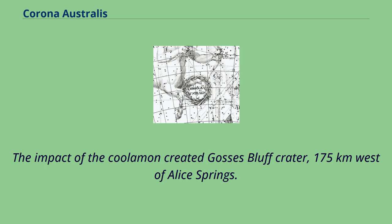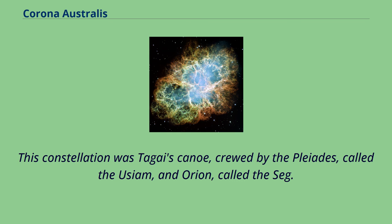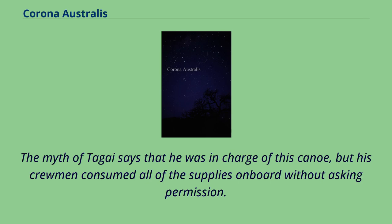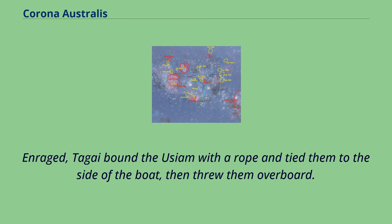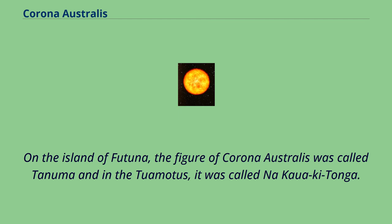The Torres Strait Islander peoples saw Corona Australis as part of a larger constellation encompassing part of Sagittarius and the tip of Scorpius's tail; the Pleiades and Orion were also associated. This constellation was Tagai's canoe, crewed by the Pleiades (called the Usiam) and Orion (called the Sag). The myth of Tagai says he was in charge of this canoe, but his crewmen consumed all of the supplies on board without asking permission. Enraged, Tagai bound the Usiam with a rope, tied them to the side of the boat, then threw them overboard. Scorpius's tail represents a suckerfish, while Eta Sagittarii and Theta Corona Australis mark the bottom of the canoe. On the island of Futuna, the figure was called Tanyuma, and in the Tuamotus, it was called Nakawa Kitanga.